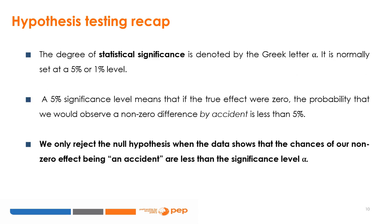The degree of statistical significance is commonly denoted by the Greek letter alpha, and it is normally set at a 5% or 1% level. A 5% significance level means that if the true effect were zero, the probability that we would observe a non-zero difference is less than 5%. Thus, we only reject the null hypothesis when the data shows that the chances of our non-zero effect being accidental are less than 5%.